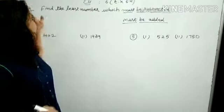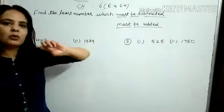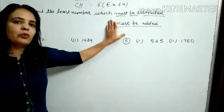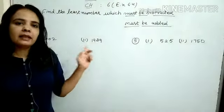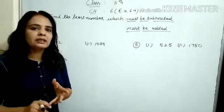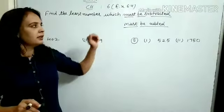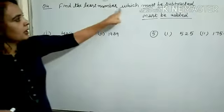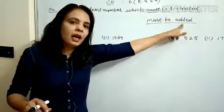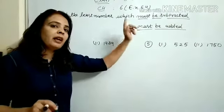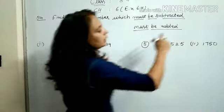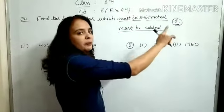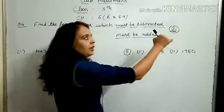In question number 4 of exercise 6.4, we have three questions for the division method. We can find square root normally, but the easy way is to use the division method. The question asks us to find the least number that must be subtracted and must be added. Remember that for must-be-multiplied and must-be-divided questions, you use the prime factor method — multiply or divide to get a perfect square.